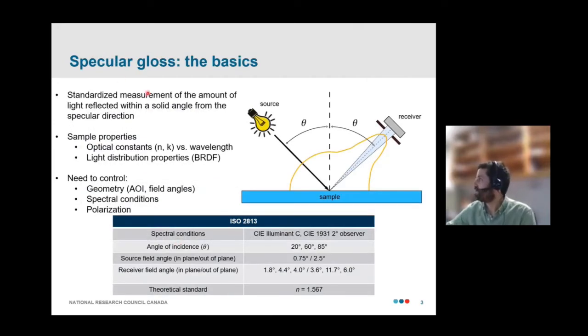So the basics of specular gloss, for the purpose of my talk, can sort of set aside the various psychophysical aspects of it that Gail outlined. And we can think of this as just a standardized measurement of the amount of light reflected within a specified solid angle about the specular direction. You've seen this kind of cartoon already several times, but in the basic experiment, we have a test sample. It's illuminated at some angle of incidence theta, and there's a receiver that collects the reflected light also viewing along the specular direction.